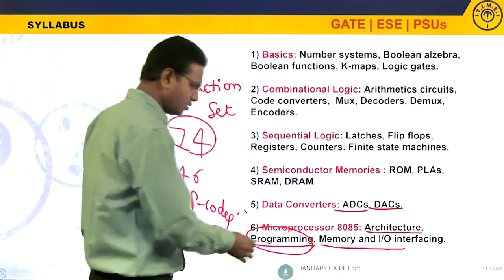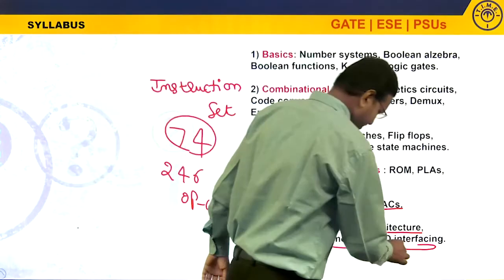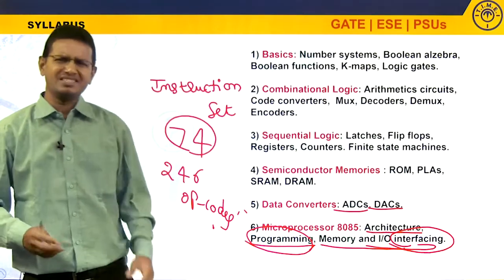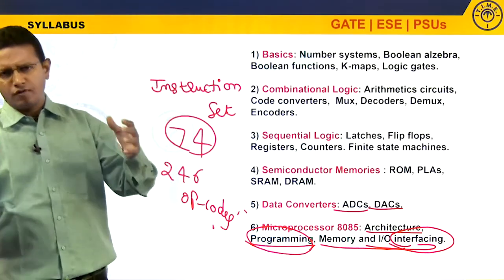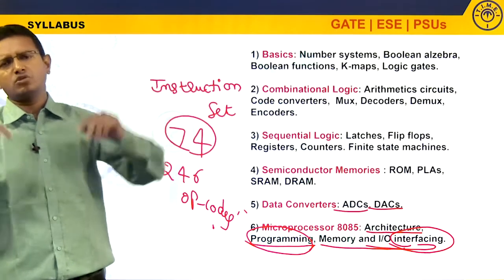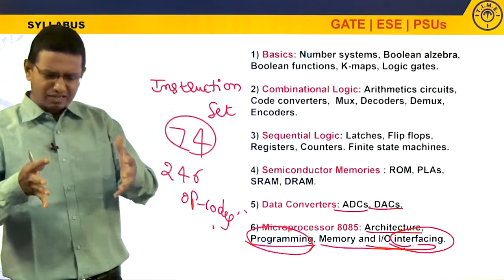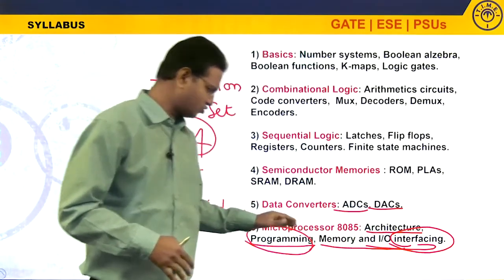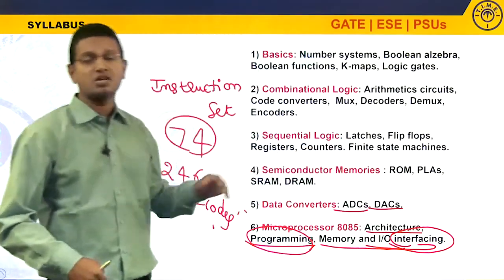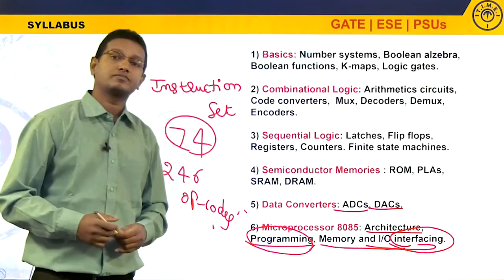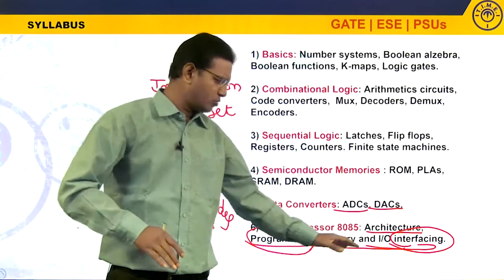Once programming is done, you have to know memory and I/O interfacing. Interfacing is a technique of connecting devices to the microprocessor. The 8085 microprocessor has a total of 40 pins, and hundreds of devices can be connected to it using interfacing techniques. If you are connecting memory to the microprocessor, it is called memory interfacing; if you are connecting input/output devices, it is called I/O interfacing. Questions from interfacing come rarely, but you have to know the basics.